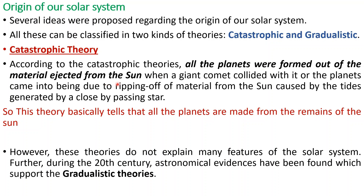According to the catastrophic theories, all the planets of our solar system were formed out of materials ejected from the sun when a giant comet or something like that collided with it, or the planets came into being due to the ripping off of materials from the sun caused by massive tides generated by a closely passing star. Basically, the catastrophic theory tells us that all the planets in our solar system are made from the remnants of the sun.